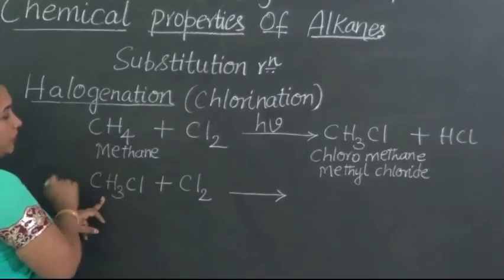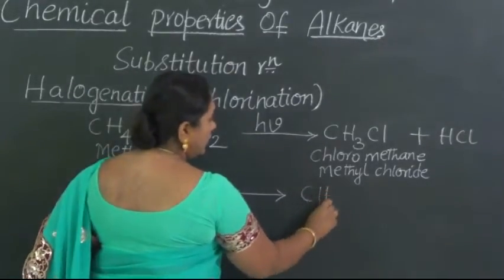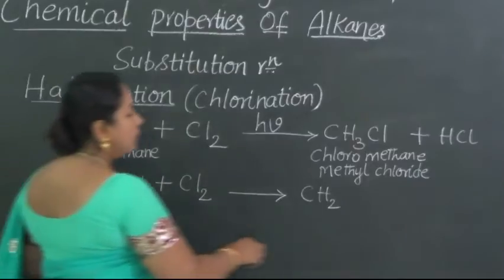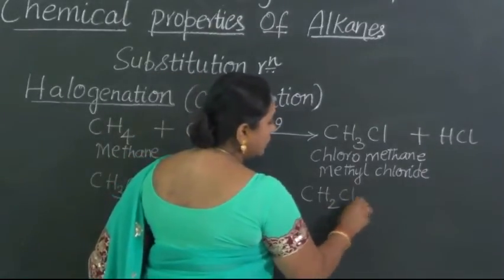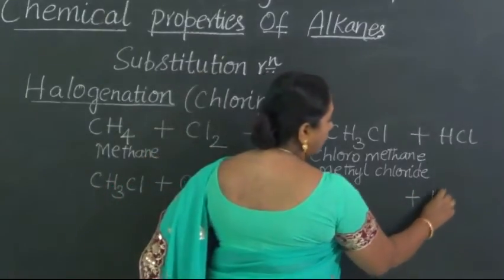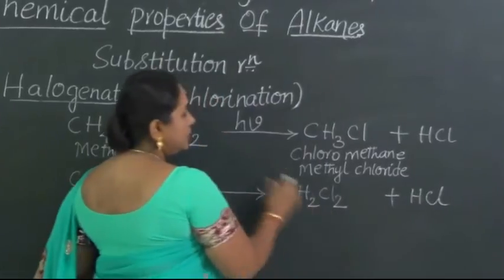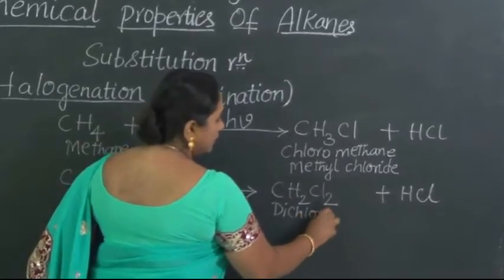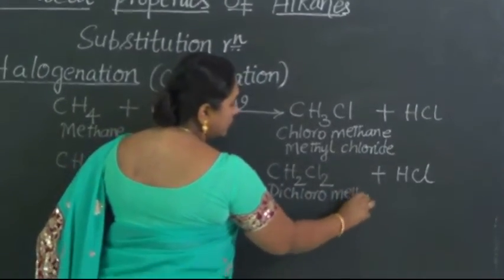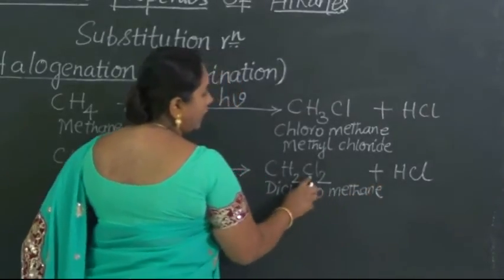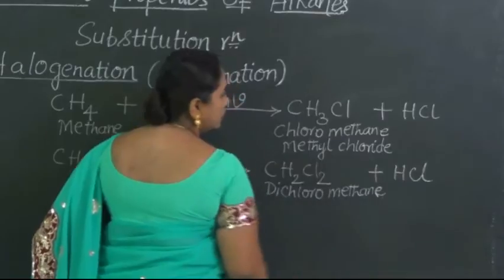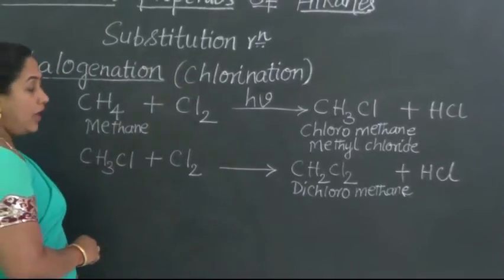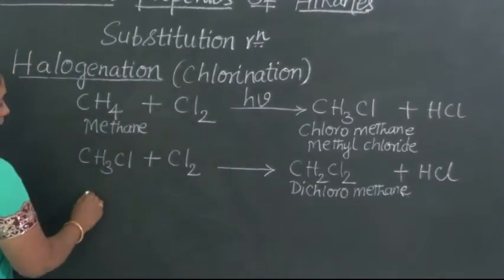So what do we have? Now, instead of 3H, we will be getting 2H. So CH2 and there is only one Cl. One more Cl would be there now which has come in the place of a H. Therefore, CH2Cl2 along with HCl. What's the name of this compound? Dichloromethane, because it's a substituted product of methane and we find the presence of 2 chlorine there. Therefore, dichloromethane or methyl dichloride. That's a trivial nomenclature.